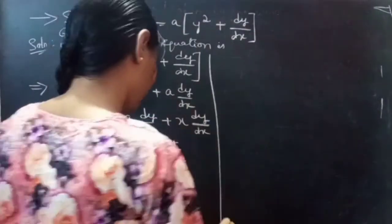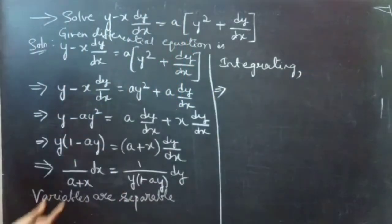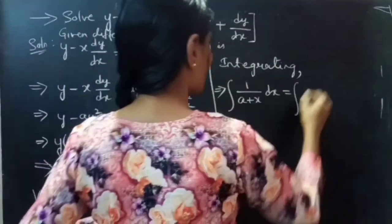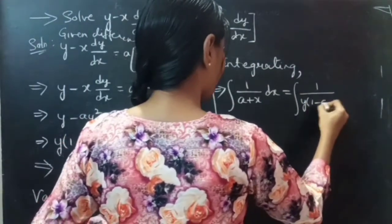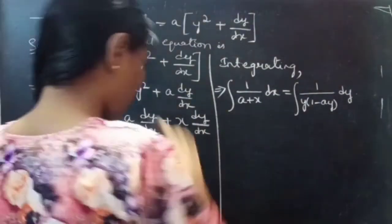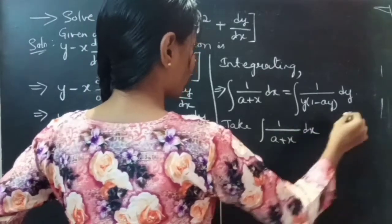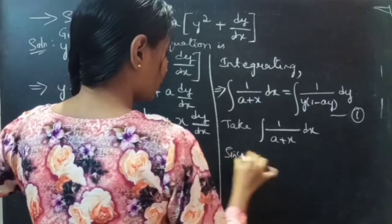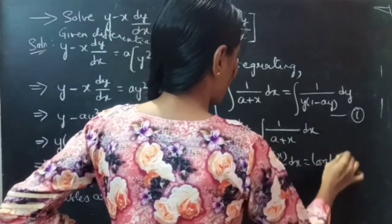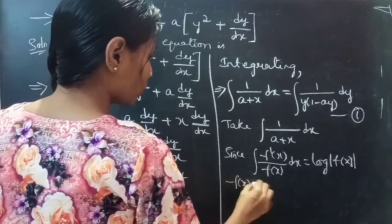Now we integrate both sides. The integral of 1/(a plus x) dx equals the integral of 1/(y(1 minus ay)) dy. Let's solve the LHS part first. Consider integral of 1/(a plus x) dx. We know that integral of f'(x)/f(x) dx equals log|f(x)|. Let f(x) equals a plus x.